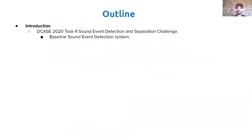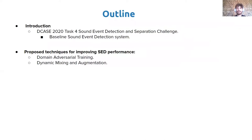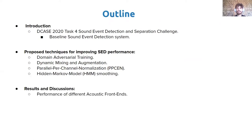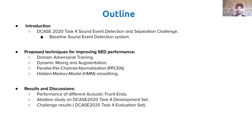Firstly, we will give a brief overview about DCASE 2020 Task 4 data and Sound Event Detection. We will also describe the challenge baseline Sound Event Detection system, which we use for our experiments. Following, we will describe four different proposed techniques which can improve SED performance with minimal computational overhead at inference time: Domain Adversarial Training, Dynamic Mixing and Augmentation, Parallel Per-Channel Normalization, and Hidden Markov Model-Based Smoothing. Next, we will present our results, showing performance for different acoustic frontends and results of an ablation study. At last, we will report the results obtained in the challenge, and finally draw conclusions.